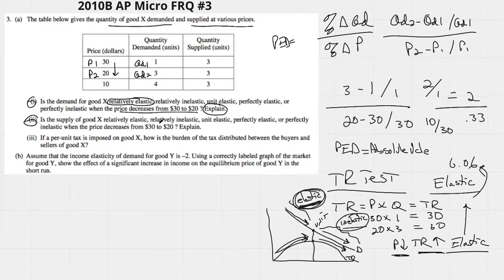Two, is the supply of good X relatively elastic? When the price decreases from 30 to 20, quantity supply doesn't change at all. And in essence, all I have is a vertical supply curve.